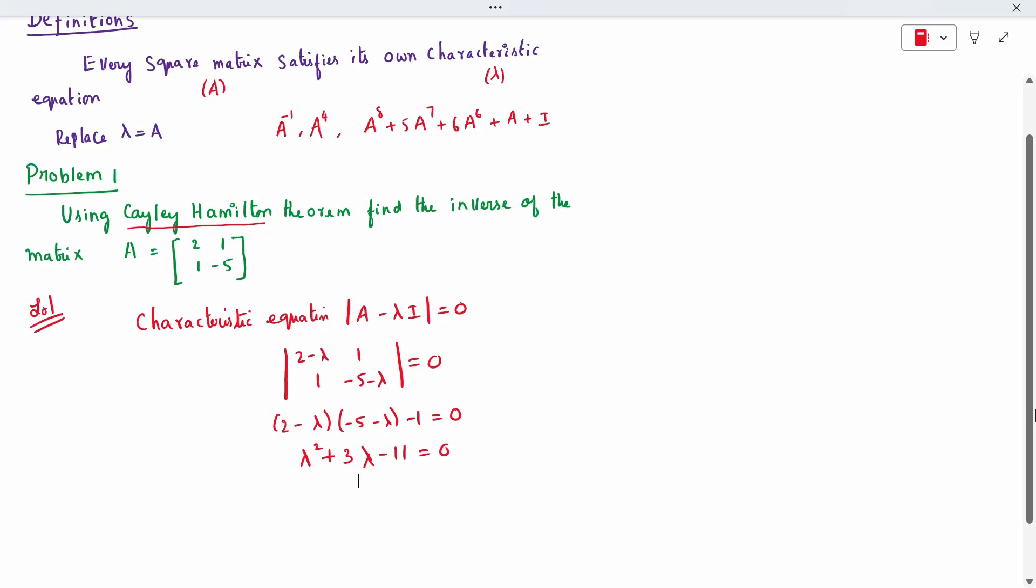Now what I am going to do is I am going to apply Cayley-Hamilton theorem because they have mentioned do it by Cayley-Hamilton theorem. So by Cayley-Hamilton theorem, now all this lambda, it can be written in the A form. A squared plus 3A minus 11 equal to 0. Your Cayley-Hamilton is lambda is replaced by A. That only I have written in this. This is called Cayley-Hamilton theorem.